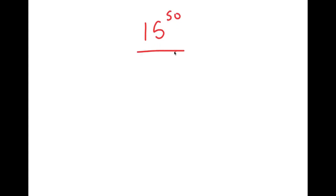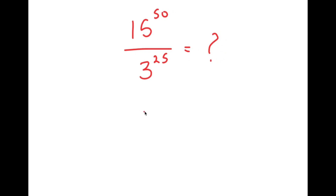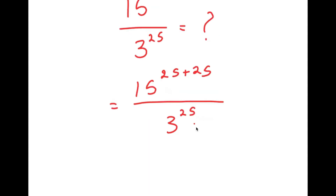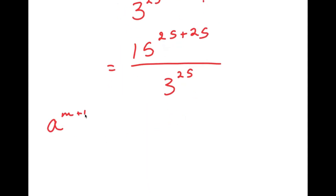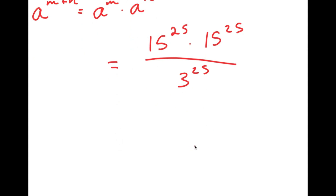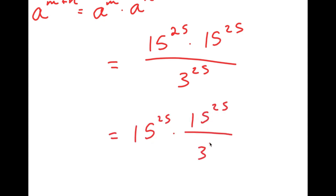In this video, I'm going to solve the problem 15 to the power of 50 over 3 to the power of 25. To solve this, I'm going to first start by rewriting this as 15 to the power of 25 plus 25 over 3 to the power of 25. The reason I did this is because now I can use the property a to the power of m plus n is equal to a to the power of m times a to the power of n. So 15 to the power of 25 plus 25 equals 15 to the power of 25 times 15 to the power of 25, and I have this over 3 to the power of 25.